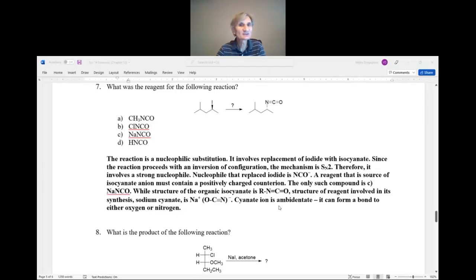So now we are going to start with question 7. What was the reagent for the following reaction? Here you have alkyl iodide, secondary alkyl iodide, which means that the reaction mechanism could be either SN1 or SN2. And then we have this product isocyanate.